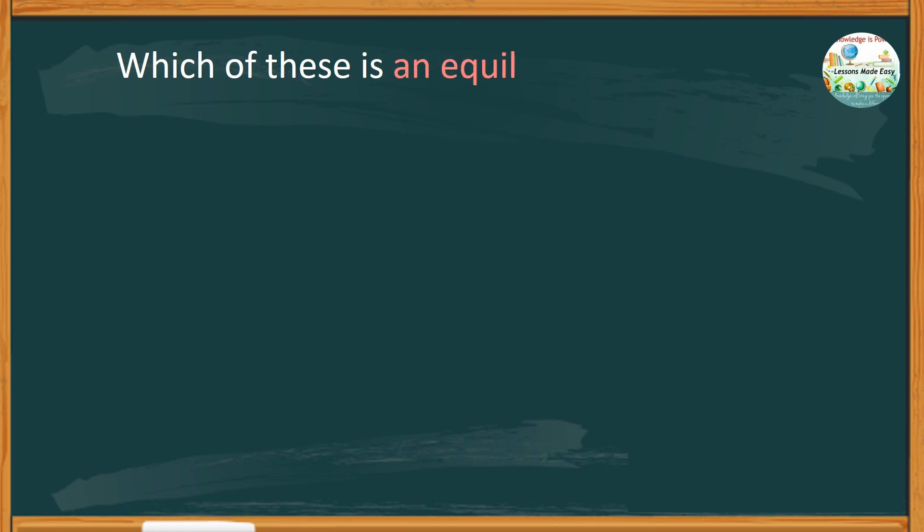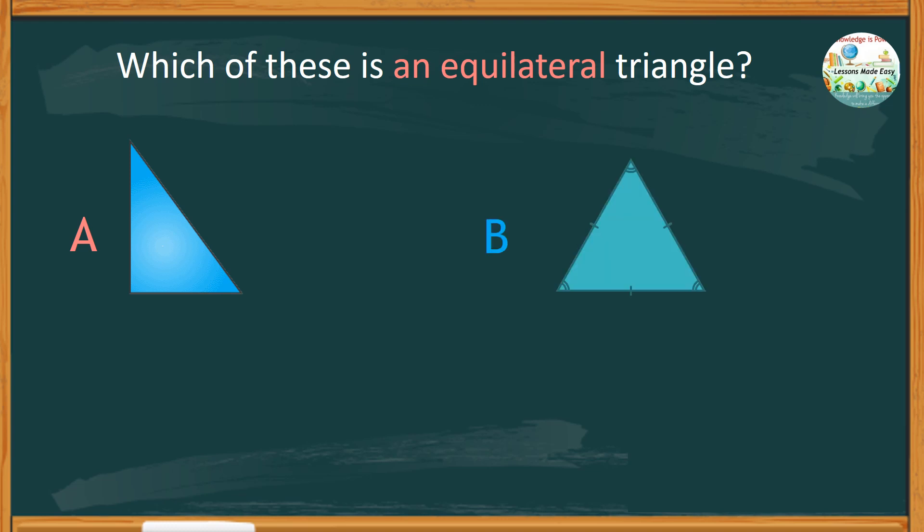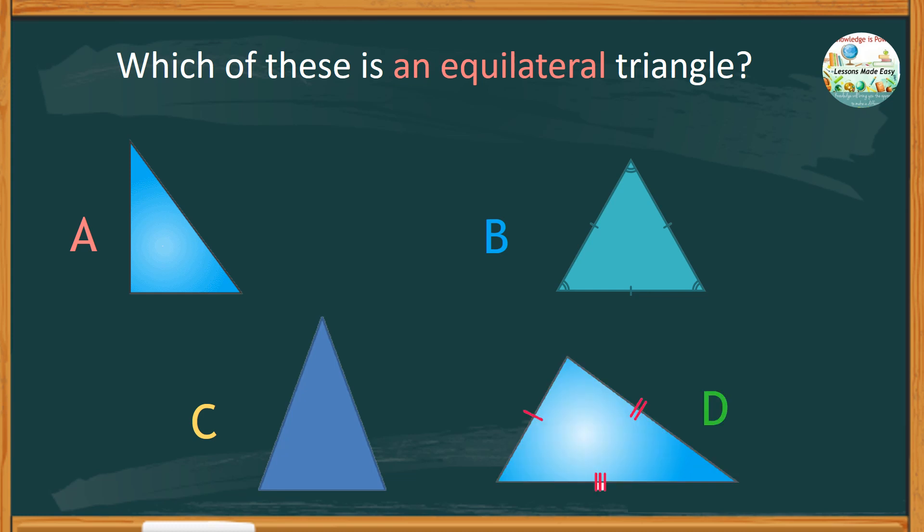Here is the third question. Which of these is an equilateral triangle? Is it triangle A, triangle B, triangle C, or triangle D? So, what's your choice? For the correct answer, it is triangle B. All the three sides of triangle B are equal and the sizes of the angles are also the same.